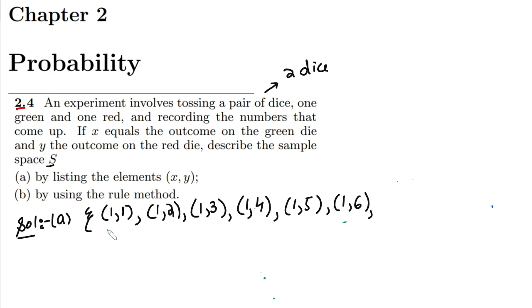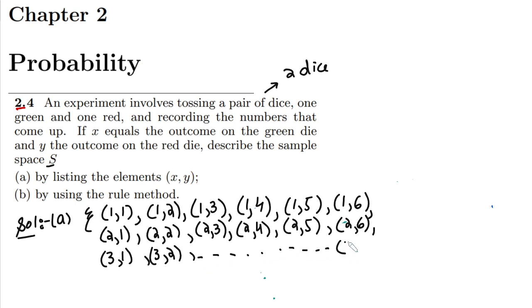Similarly x can have a value 2: (2,1), (2,2), (2,3), (2,4), (2,5), (2,6). When x is 3: (3,1), (3,2), and up to (3,6). And similarly it can go from 1 to 6 where x can have value 6: (6,1), (6,2), (6,3) all up to (6,6). So that would be the end of this.